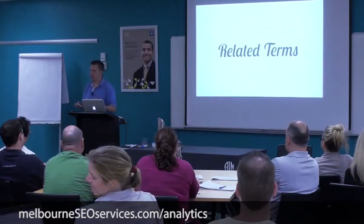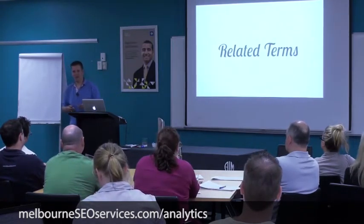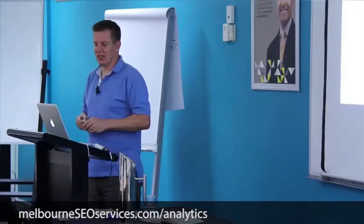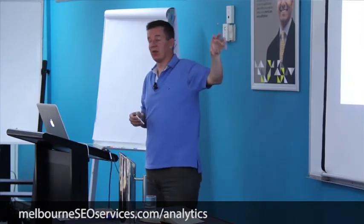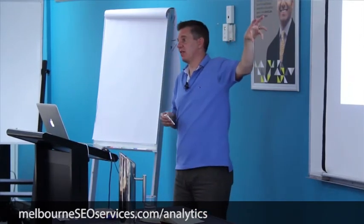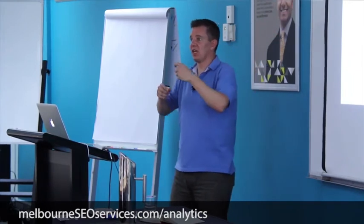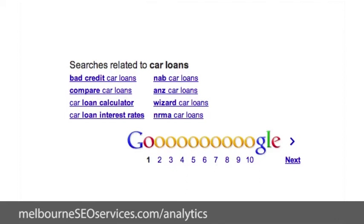We used to have this thing called the Wonder Wheel — all you old timers will remember it on Google. They took that away about three years ago, but if you search to the bottom of a Google search results page, you can still get the related terms. That's really good fodder for thinking of new themes. Each theme becomes an ad group — there's another potential eight ad groups and eight new themes. You could use those to brainstorm some recipes, but you don't have to build the recipes by hand; use the Contextual Tool for that.